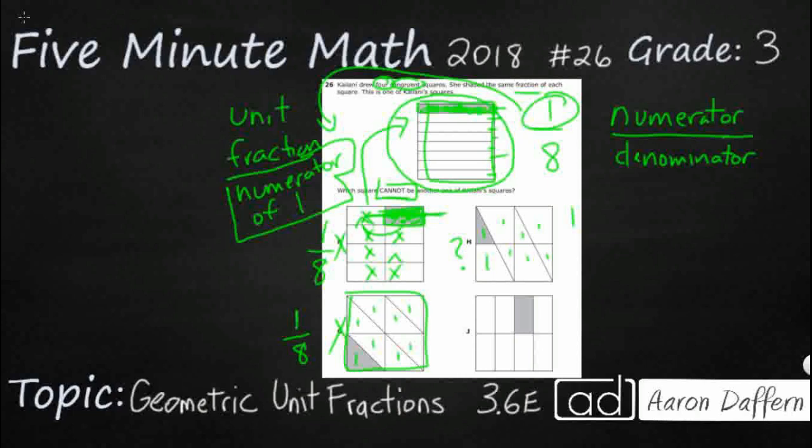J almost kind of looks like F. It's got one part. And it's got one, two, three, four, five, six, seven, eight total parts. So one part shaded, eight total parts. So it is also going to be one-eighth.